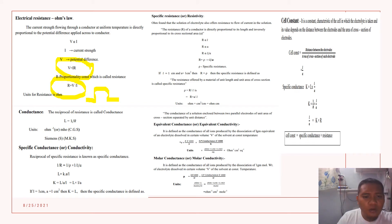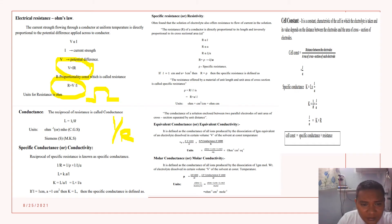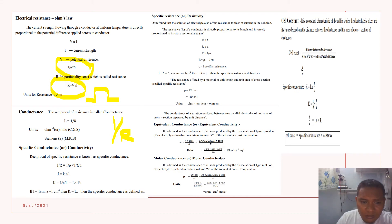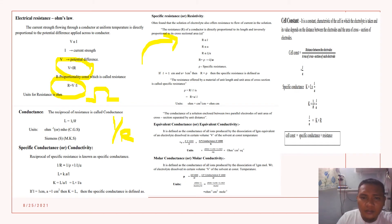We have conductance — conductance is simply the reciprocal of resistance: 1 over R. Then we have specific conductance, which is the reciprocal of specific resistance.